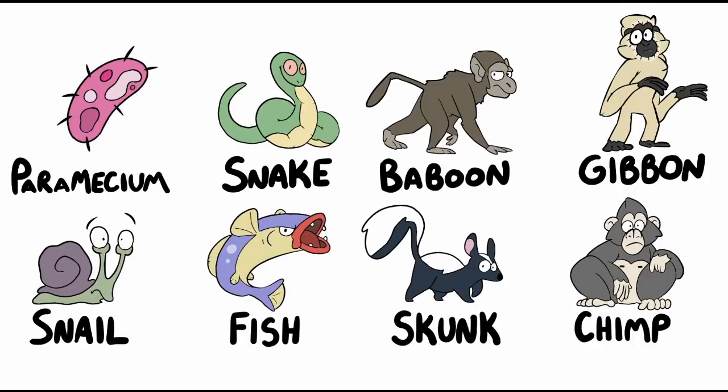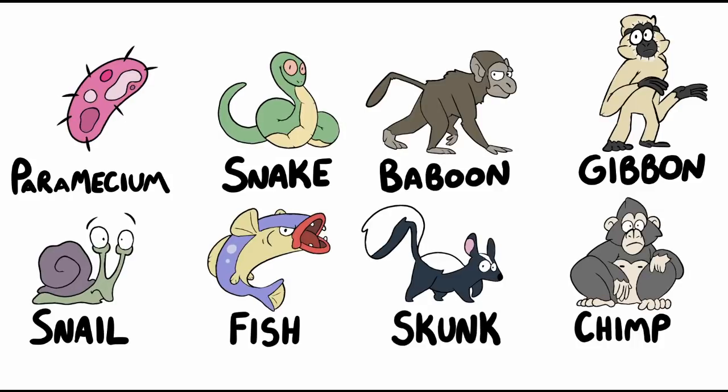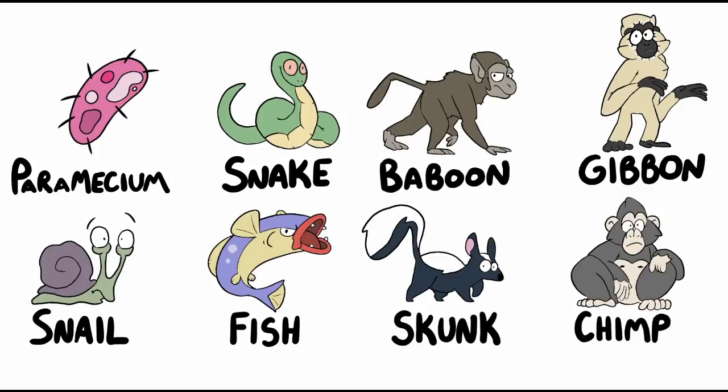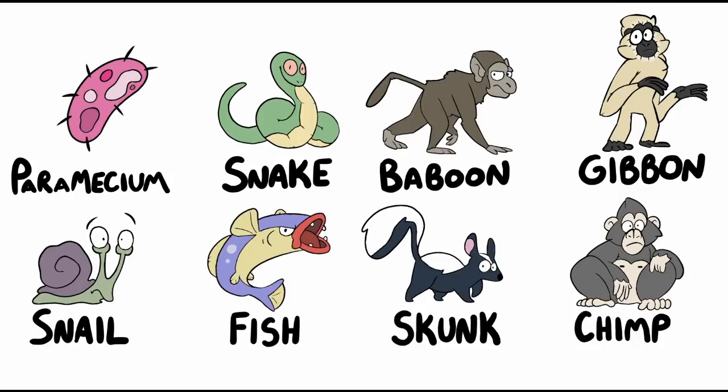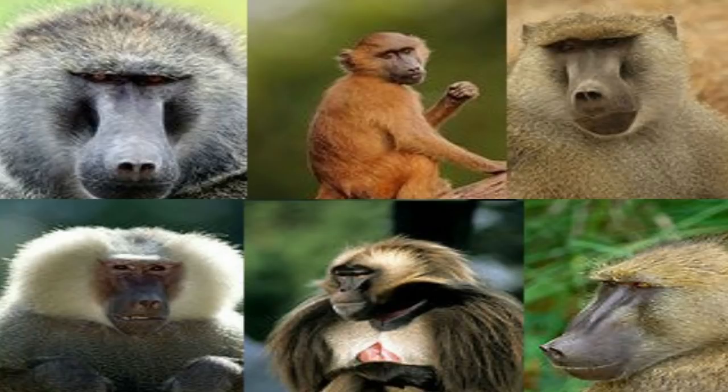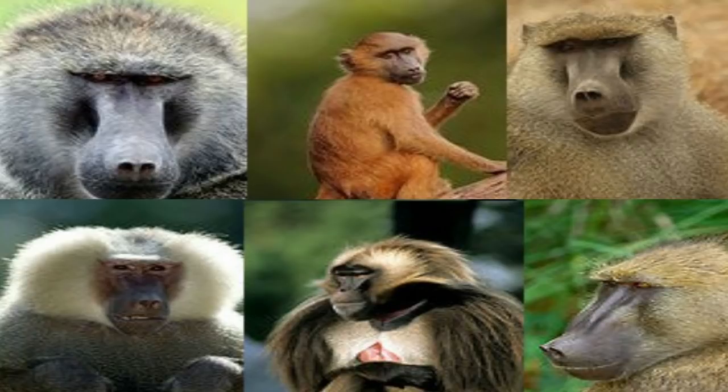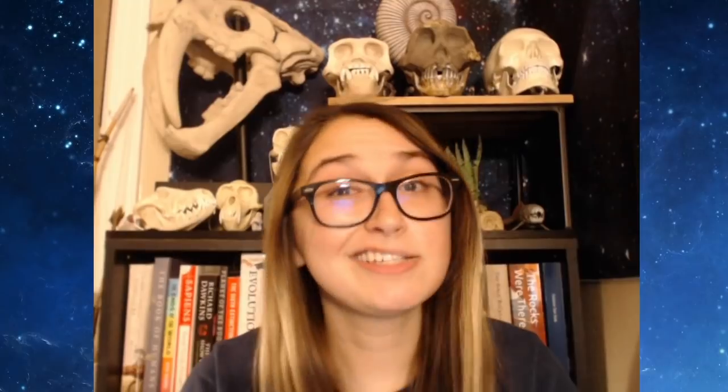Paramecium, snail, fish, snake, skunk, baboon, gibbon, and chimp. For our purposes, it doesn't matter the species of snail or fish, whether they are garden snails or alligator gar. And in the same way, it doesn't matter what species of chimp, gibbon, or baboon we're using — you'll see what I mean later. Some of these critters are very different from one another, are they not?